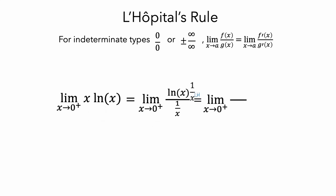The derivative of the numerator is 1 over x, and the derivative of the denominator is negative 1 over x squared. This looks a bit complicated at first, but if you multiply the numerator and denominator by the reciprocal of the denominator, this simplifies to just the limit as x goes to 0 of negative x. And this limit is equal to 0.